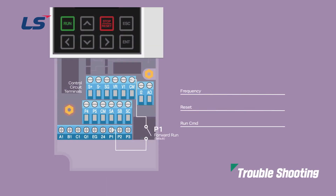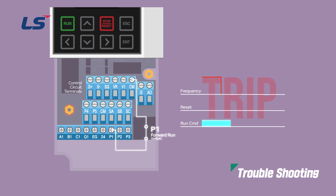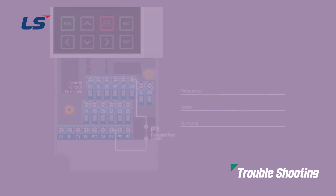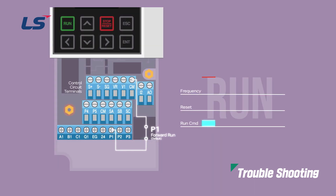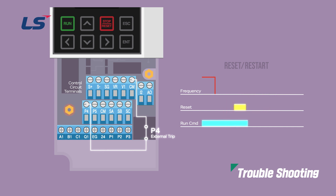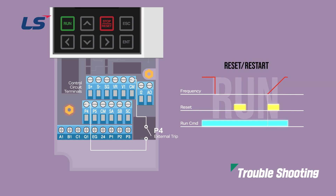Let's look at what to check when the Auto Restart feature is not working properly. First, the Reset and Restart function will only work properly if the Terminal Block Operation command is turned on. If terminal commands are turned off, the feature will not work, so be sure to check that. Also, even if the P4 terminal set as External Trip is still short-circuited, it will not be restarted due to the trip state, so be sure to open it after generating an External Trip.